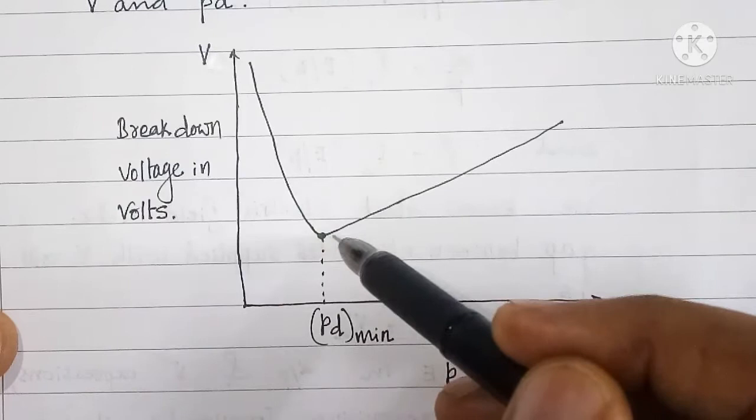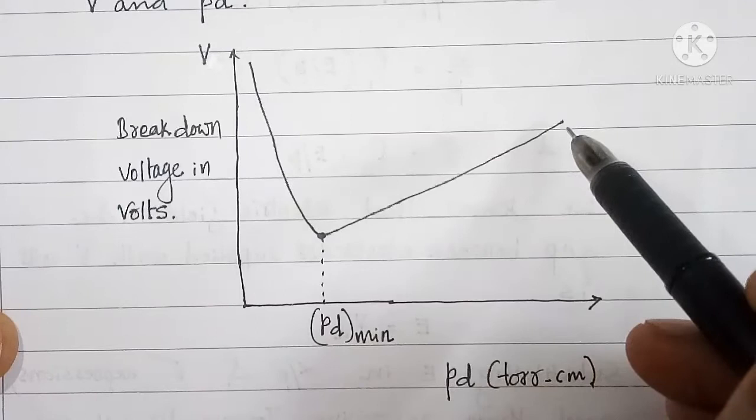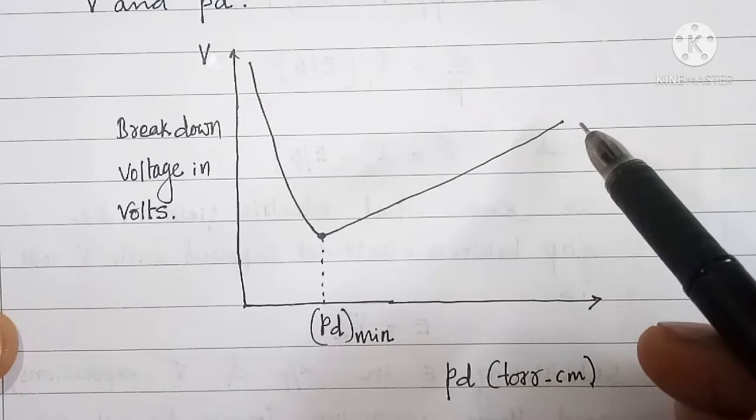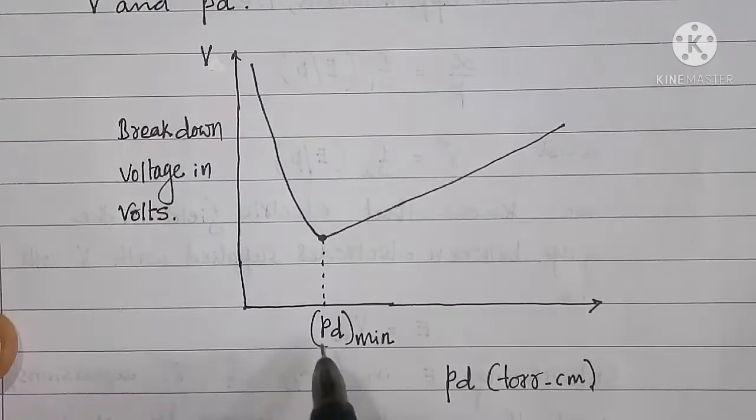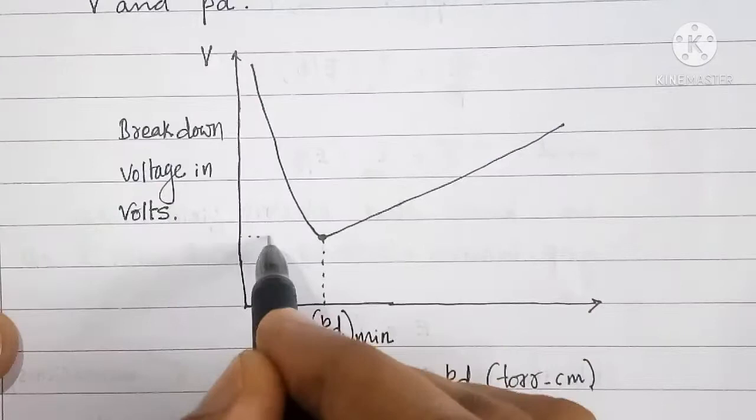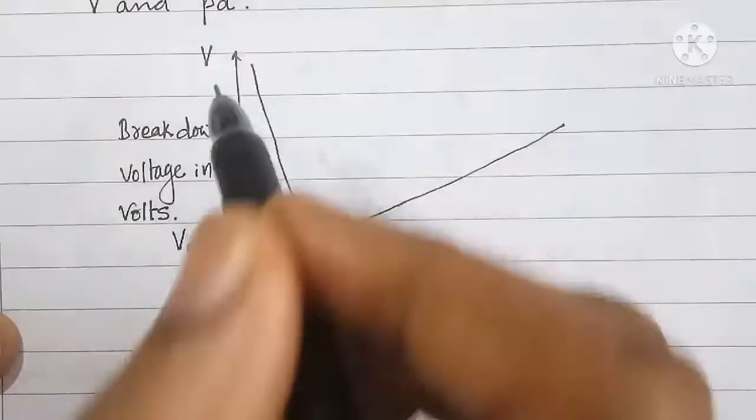But at certain PD value and thereafter if the PD value increases the breakdown voltage also increases. The breakdown voltage is for one type of gas. If we go on changing the gas between the given electrodes, then we can have a family of such graphs. Product PD corresponding to minimum breakdown voltage is written here as PD minimum.